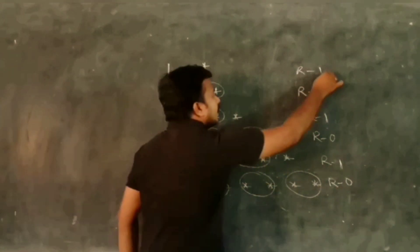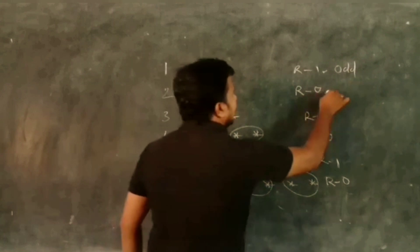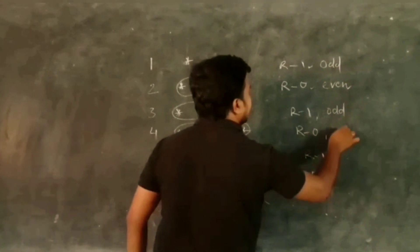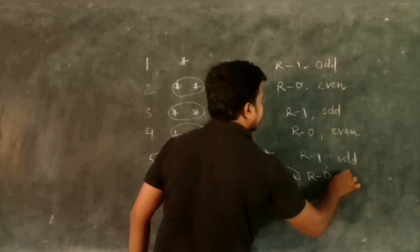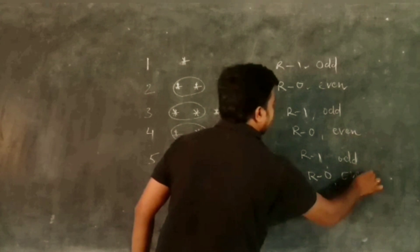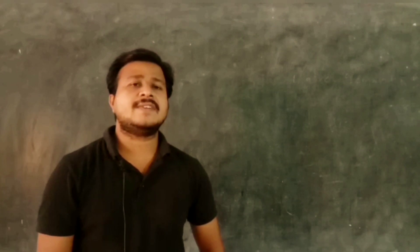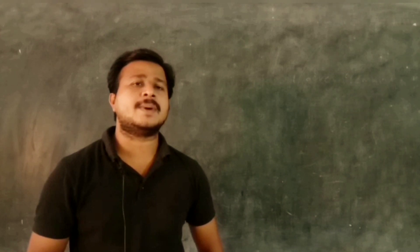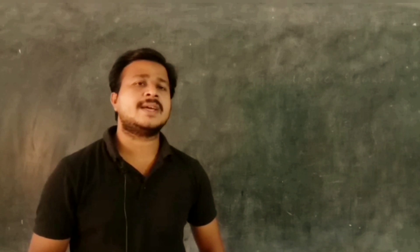If remainder is 1, it is called an odd number. If remainder is 0, it is called an even number. So 1, 3, 5 are odd numbers and 2, 4, 6 are even numbers. Definitions: if a number is divisible by 2 and gives 0 as remainder it is called an even number. If a number is divisible by 2 and gives 1 as remainder it is called an odd number.